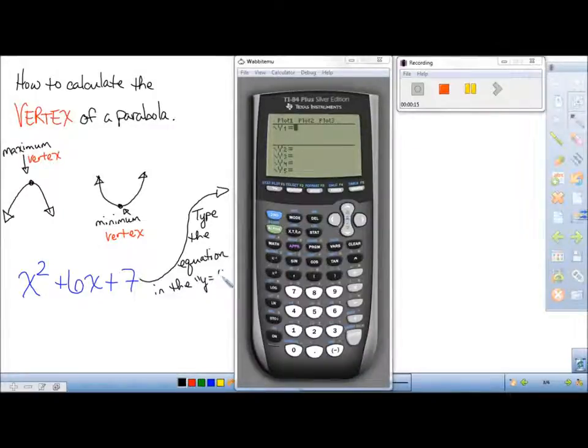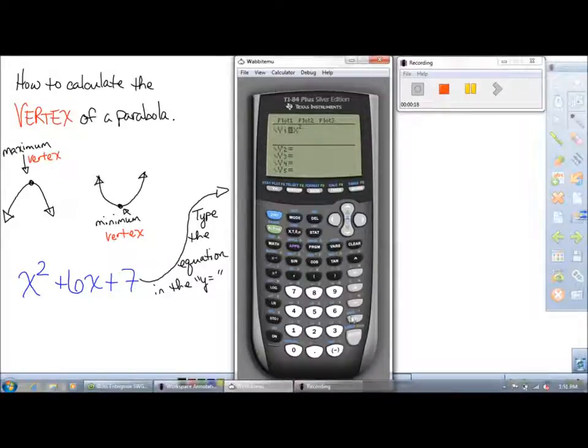If you're not sure what a vertex is, you can look at these graphs as if you are riding a roller coaster. If you look over to the left while this is getting typed in, a maximum would be like at the top of the roller coaster hill and a minimum would be at the bottom of the roller coaster hill.